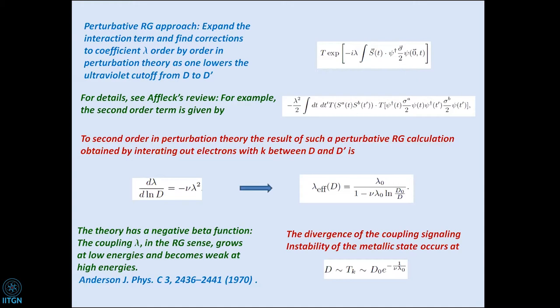This instability is a crossover, called the Kondo crossover. Below this instability scale, there is a new ground state where the impurity spin gets completely screened by the spins of the surrounding electrons. In the Kondo state at low energy, if you try to measure the spin of the impurity you get zero, because the electrons form a singlet with it. At high energy, screening doesn't work and you get spin half for the impurity. This difference signifies a crossover to the Kondo phase, and this is the Kondo screening.